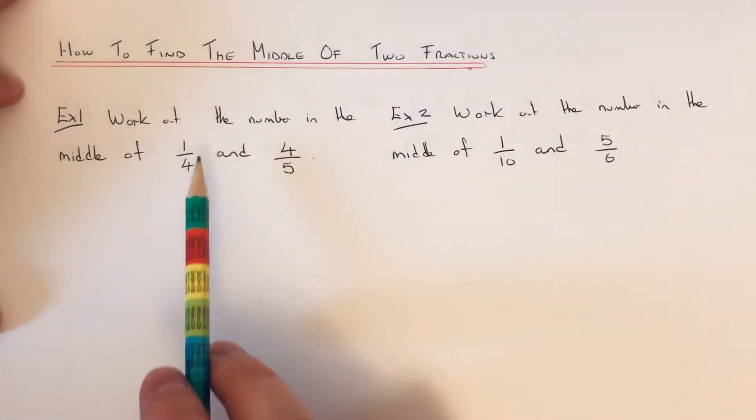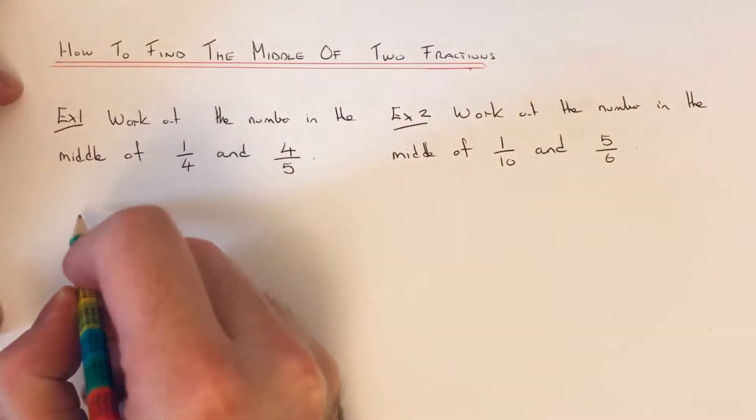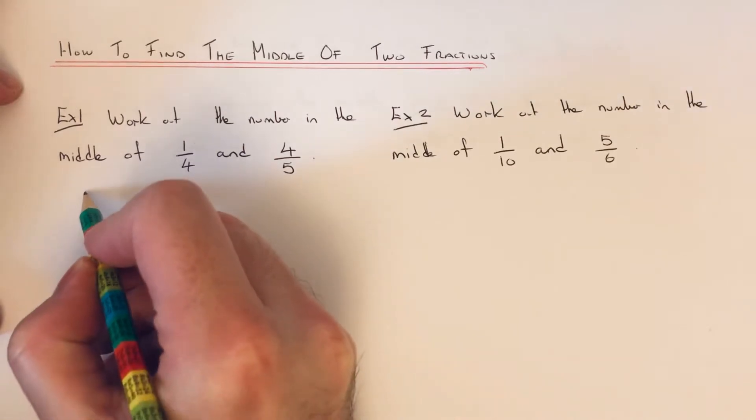So example one is to work out the number in the middle of one quarter and four fifths. So the first thing you need to do is add these two fractions up.